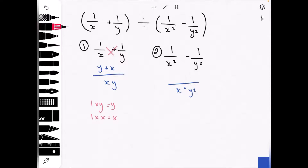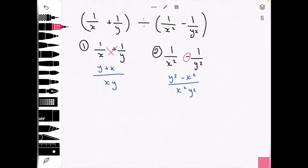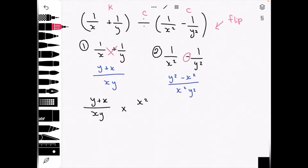Cross multiplying: 1 times y squared equals y squared, and x squared times negative 1 equals negative x squared, because the original sign is negative. So the numerator is y squared minus x squared. To convert from division to multiplication, we keep, change, and change — flipping the second fraction. We get (y plus x) over (x times y) times (x squared times y squared) over (y squared minus x squared).